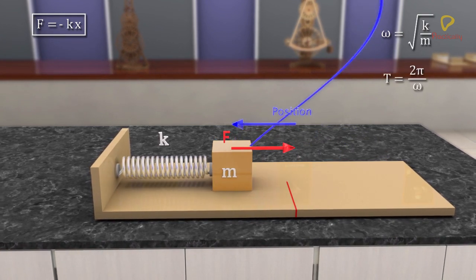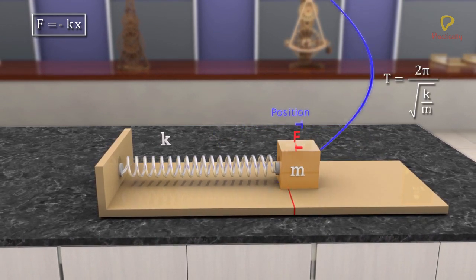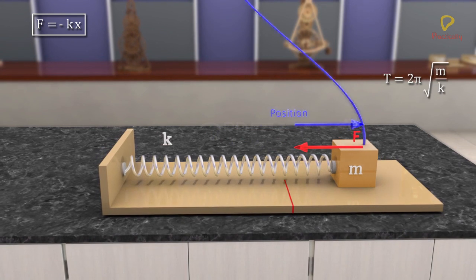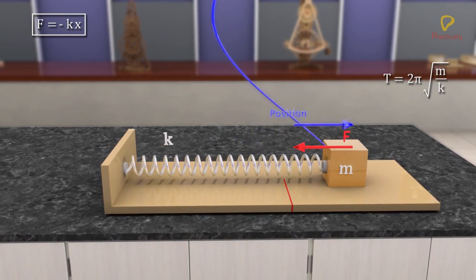Hence, time period of the spring block system t is equal to 2 pi root over m by k.